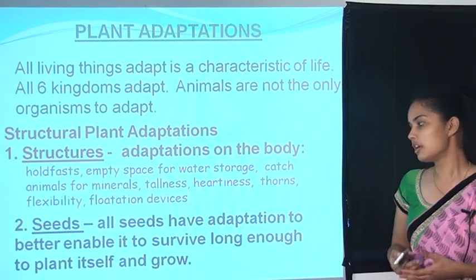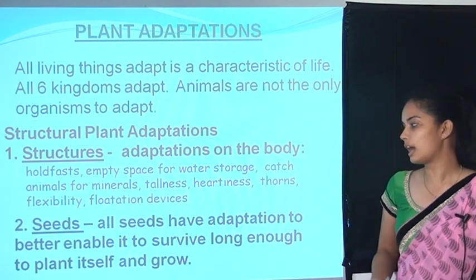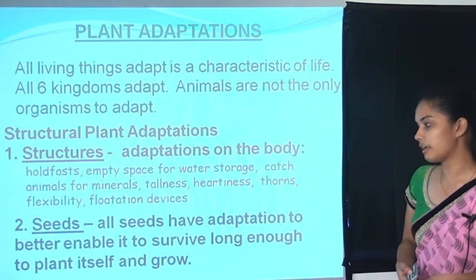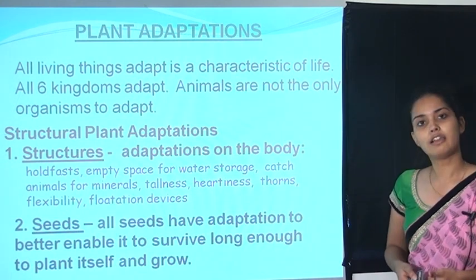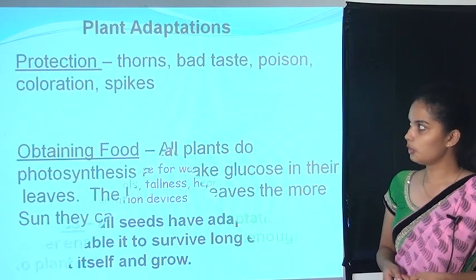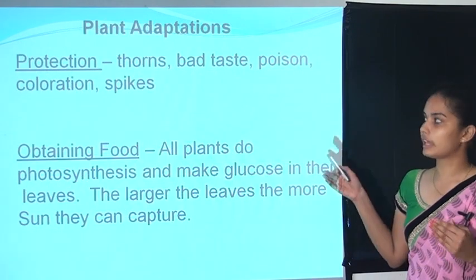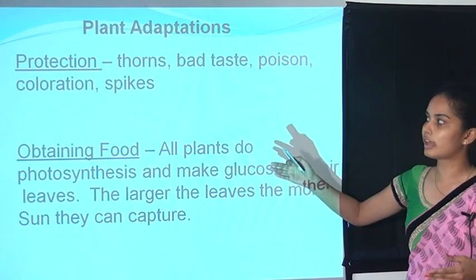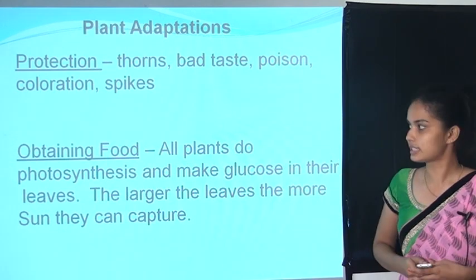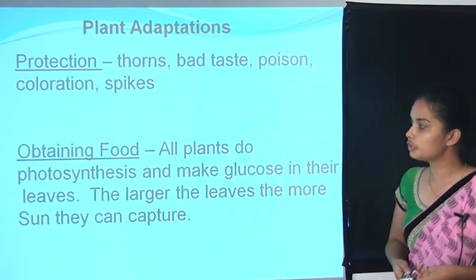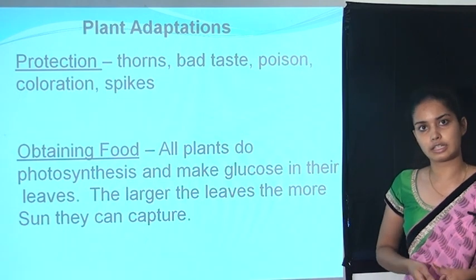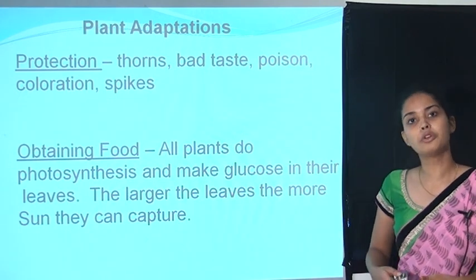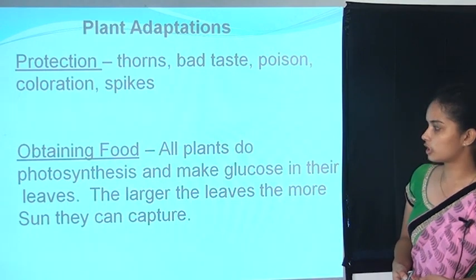Seeds are baby plants — they have adaptations to survive long enough to plant themselves and grow. For protection, plants have parts like thorns, bad taste, poison, coloration, and spikes. For obtaining food, all plants perform photosynthesis — they make glucose, producing their own food from sunlight and water.